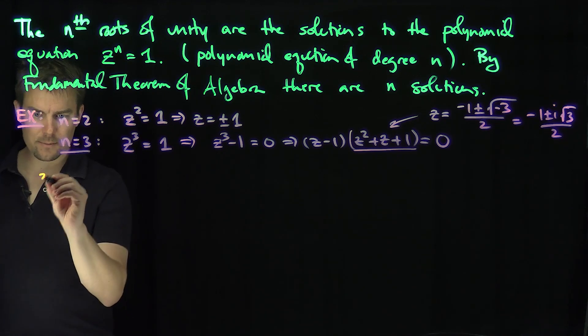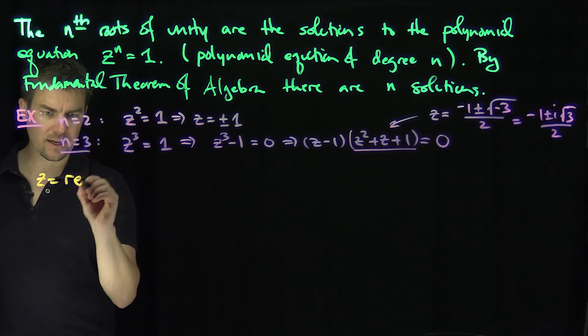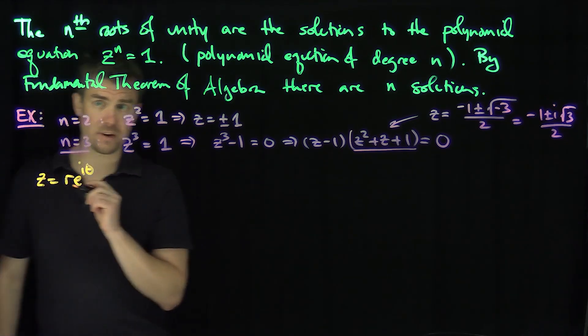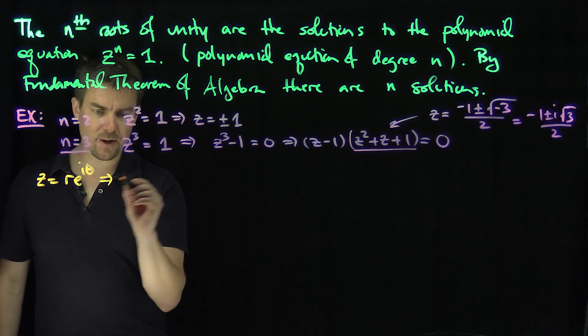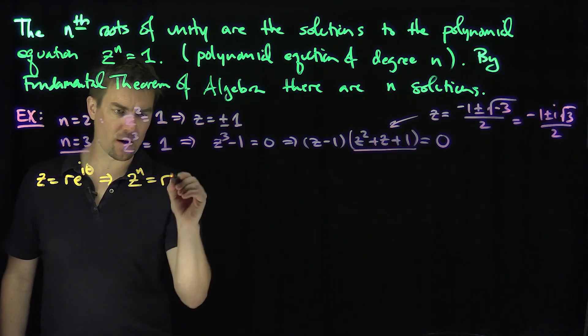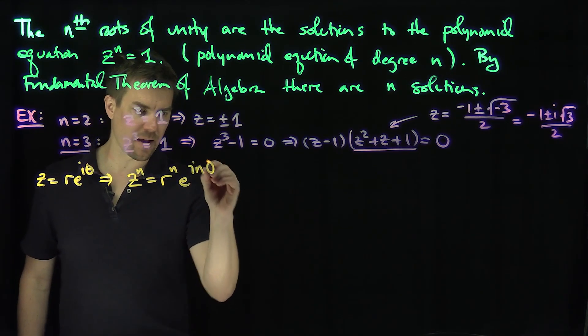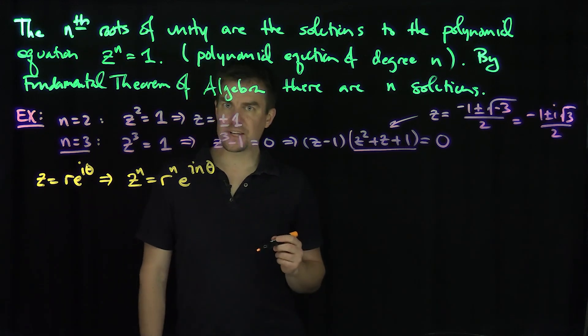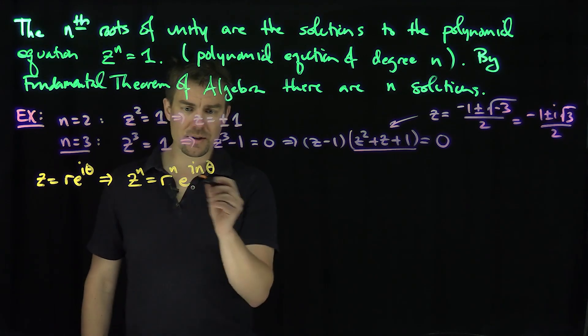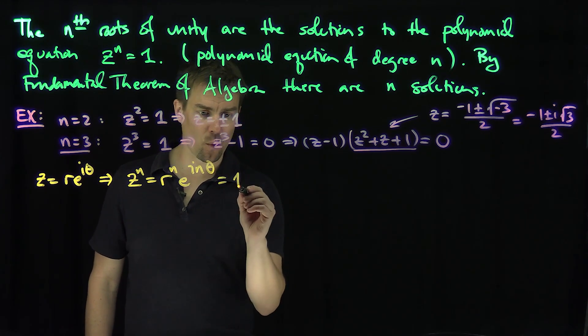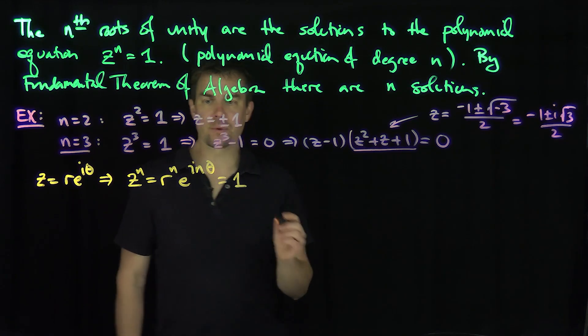Here's the idea: we're going to write z as r e to the i theta, the polar form of a complex number. Therefore, this tells me that z to the power n is r to the power n e to the i n theta. And so if z to the n is equal to 1, that says that r to the n e to the i n theta is equal to 1.